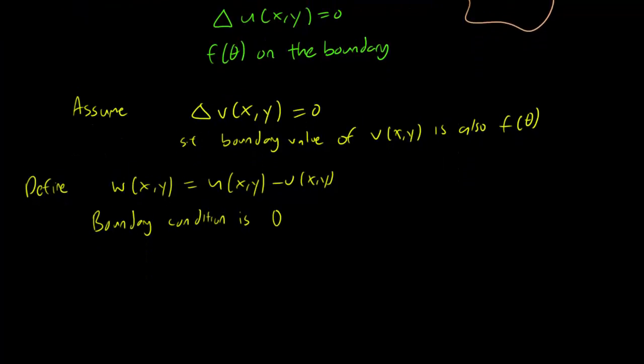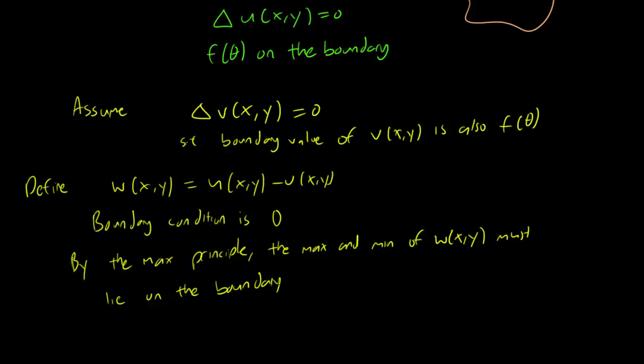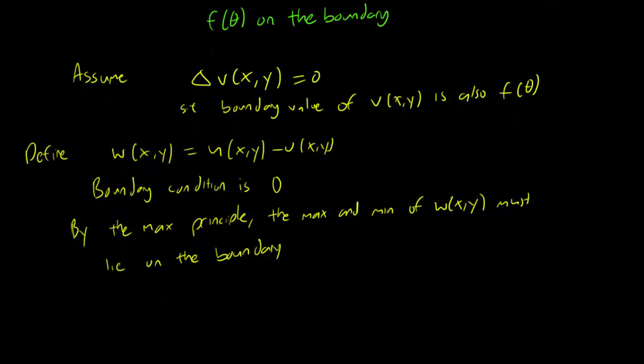But remember that by the maximum principle, the max and min of w must lie on the boundary. But the boundary temperature for this Laplace equation solution is zero everywhere. The boundary temperature for w is zero everywhere. And since the max and min of w must be on the boundary, the max and min of w must always be zero.